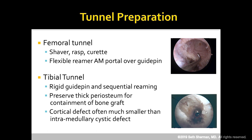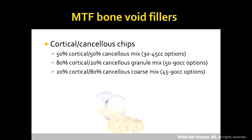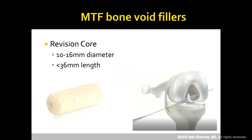Don't be fooled — the cortical defect is often much smaller than your intramedullary cystic defect. You really need to scrutinize your imaging pre-surgically and make that decision based on that, or you'll make a mistake. There's really no consensus on the right bone grafting option. Mark Miller has published on allograft bone dowels, and MTF has an entire array to help — different mixtures of cortical cancellous chips, enhanced demineralized cortical fibers in different sizes, and an exciting new revision core system.